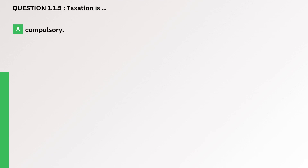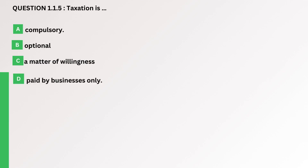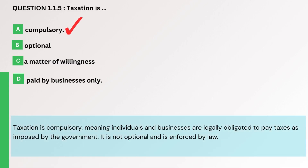Question. Taxation is. A. Compulsory. B. Optional. C. A Matter of Willingness. D. Paid by Businesses Only. The correct answer is A. Compulsory. Taxation is compulsory, meaning individuals and businesses are legally obligated to pay taxes as imposed by the government. It is not optional and is enforced by law.